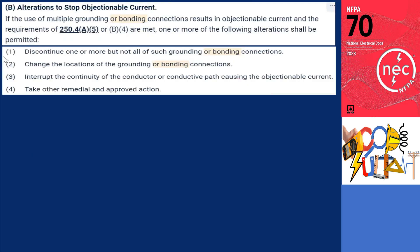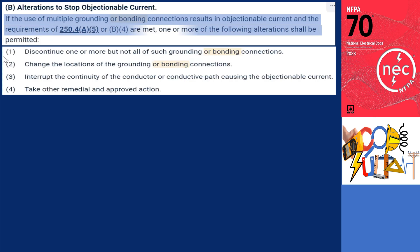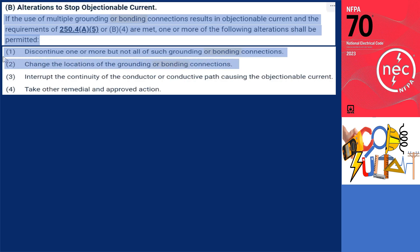What if an objectionable current exists in your system? Section 250.6B is about alterations to stop objectionable current and states that if the use of multiple grounding or bonding connections results in objectionable current and the requirements of 250.4A5 or B4 are met, one or more of the following alterations shall be permitted: discontinue one or more, but not all, of such grounding or bonding connections; change the locations of the grounding or bonding connections; interrupt the continuity of the conductor or conductive path causing the objectionable current; or take other suitable remedial and approved action.